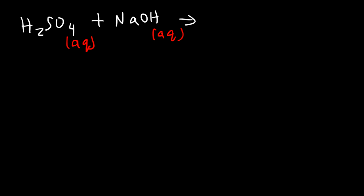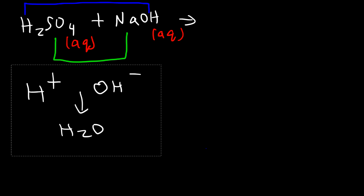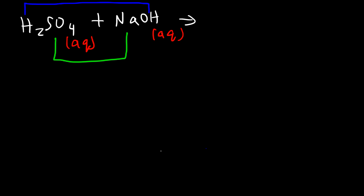So this is another double replacement reaction. It's also called an acid-base neutralization reaction. Now just like the last example we're gonna pair up the first part with the last part. And the two parts in the middle the sodium and the sulfate ions will get together. Now whenever you mix hydrogen with hydroxide it will always create H2O. So in any strong acid strong base neutralization reaction you're always gonna get water as a product. And water is in a liquid state.